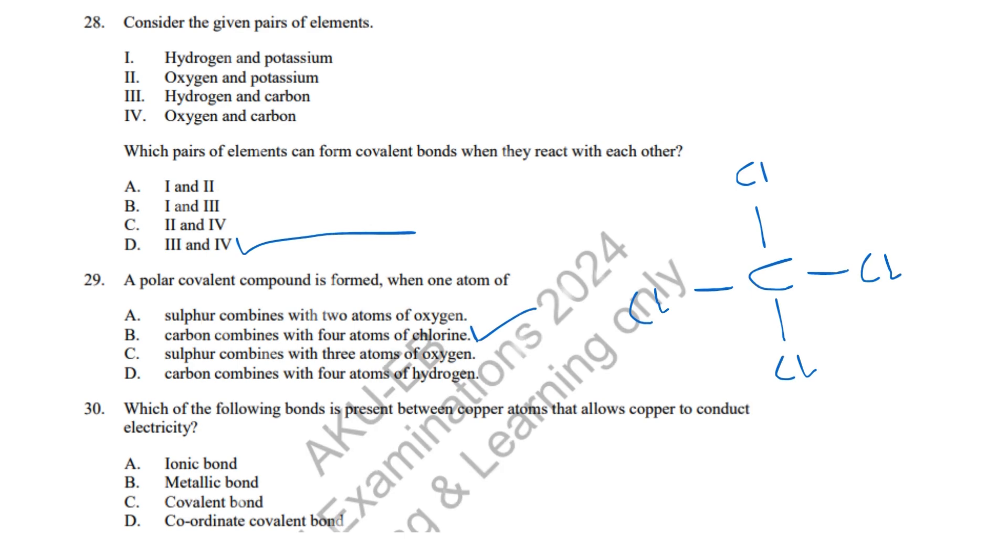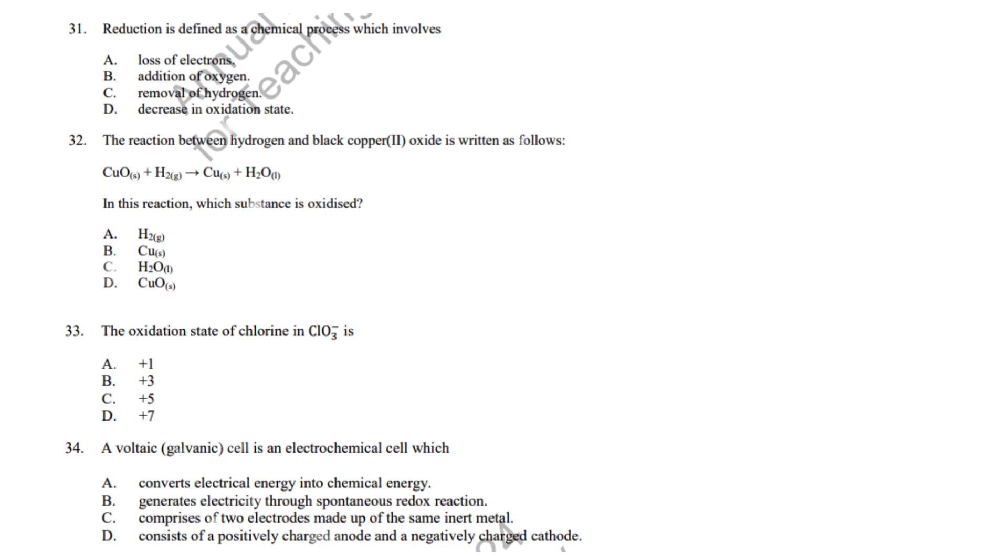Question 30: Metallic bonds involve free-moving electrons, which allow conductivity. Correct answer: B, Metallic bond. Question 31: Reduction involves a decrease in oxidation state, gain of electrons. Correct answer: D, Decrease in oxidation state.